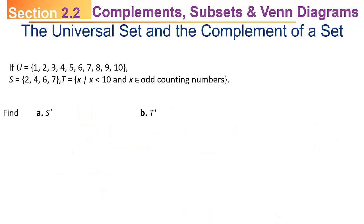Let's try this example. Suppose the universal set is the set containing the counting numbers 1, 2, 3, 4, 5, 6, 7, 8, 9, and 10. The set S is the set containing the elements 2, 4, 6, and 7. And the set T is written in set builder notation — it's the set of all x such that x is less than 10 and x is an element of the odd counting numbers.